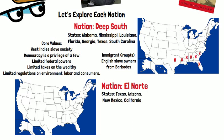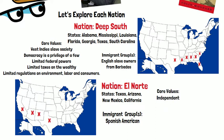The next nation is El Norte. This was settled by Spanish Americans. The states include Texas, Arizona, New Mexico, and California. The core values are independence, self-sufficiency, adaptability, a strong work ethic, and democratic reforms.